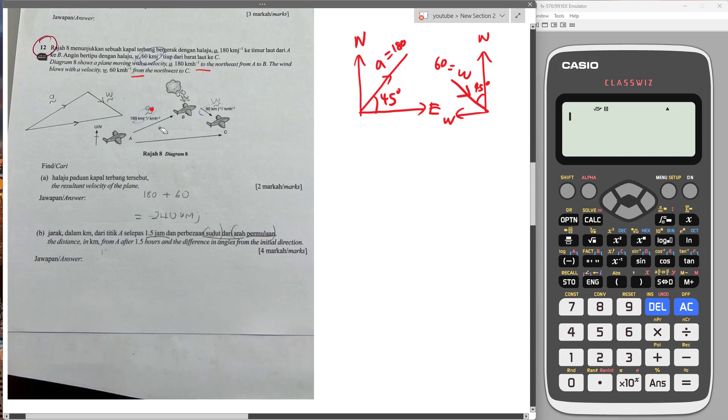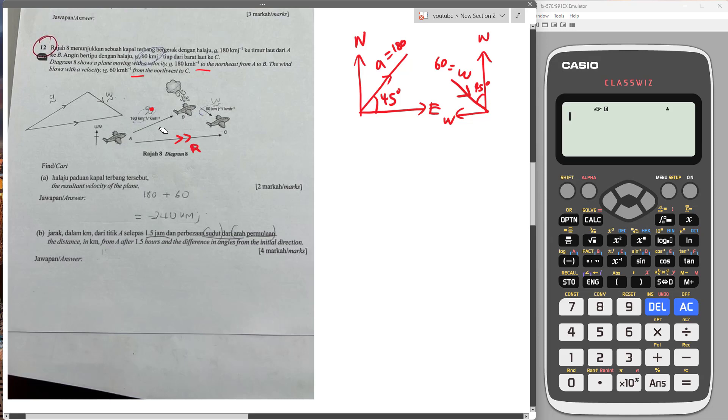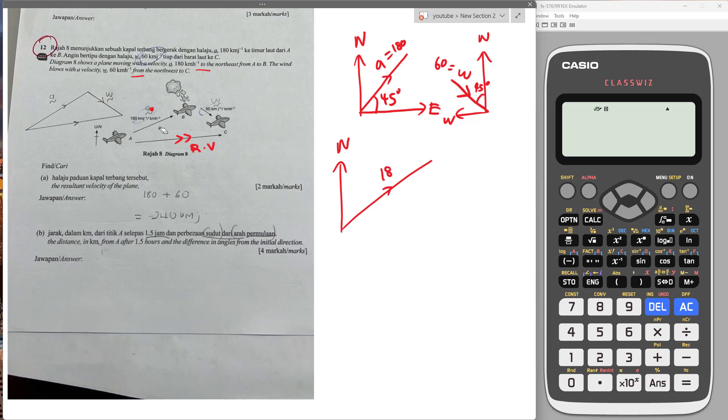The question asks us to find the resultant velocity of the plane. This question is very kind because it draws out the diagram to show you. We need to solve this triangle in order to find the resultant velocity. Since I know the 180 is at 45 degrees, I can draw like this. This one will be 180, I'll call it A, and here will be 45 degrees.